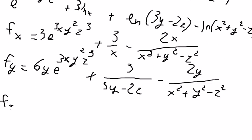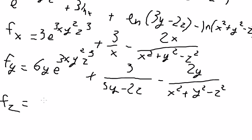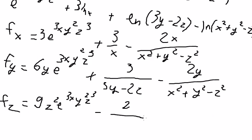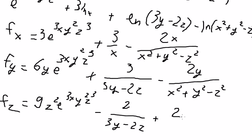Now let's go to Fz. This one has z to the power of 3, so we have 3 multiplied with z to the power of 3. You get 9z squared times e to the power of 3x·y squared·z to the power of 3. This term is a constant, so we don't write anything. We have a variable here with coefficient negative 2, so you get negative 2 over (3y minus 2z). And for the last term, you get positive 2z over (x squared plus y squared minus z squared).